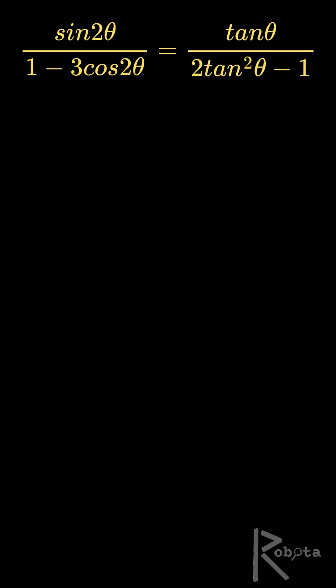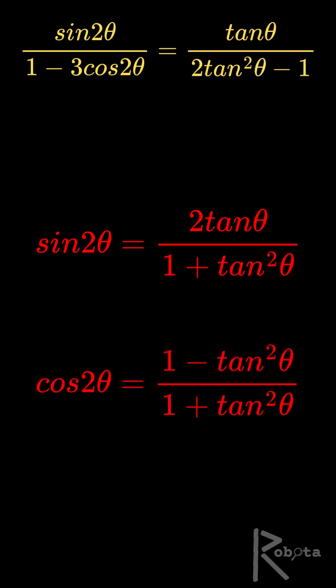First, our main technique is to convert the left side into tangent terms. We use the classic double angle identities. Sine 2 theta is 2 tan theta over 1 plus tan squared theta, and cos 2 theta is 1 minus tan squared theta over 1 plus tan squared theta.